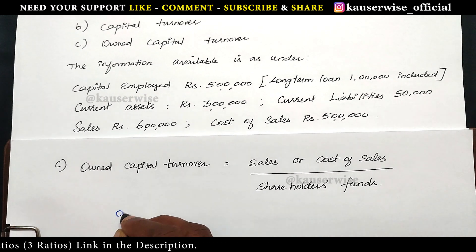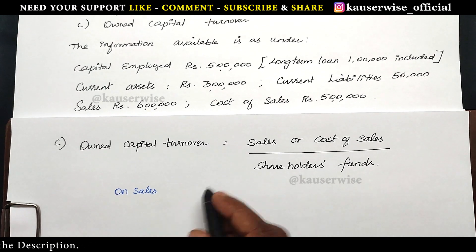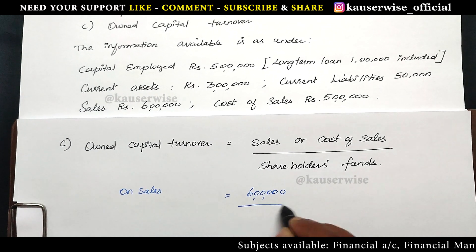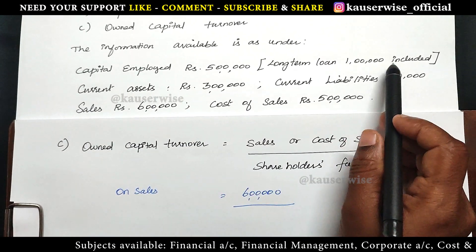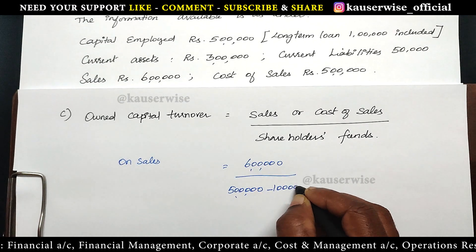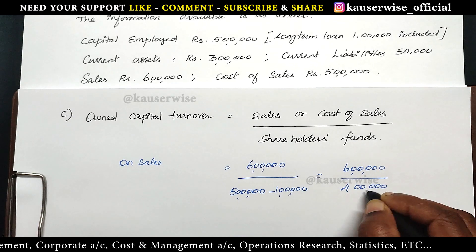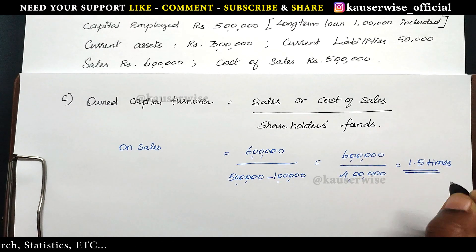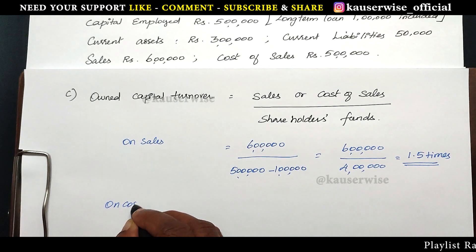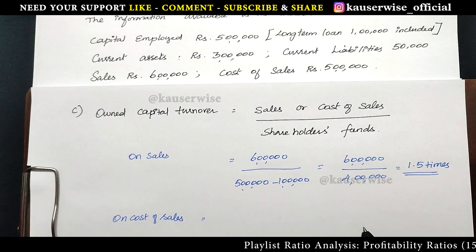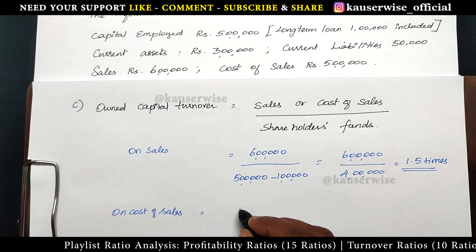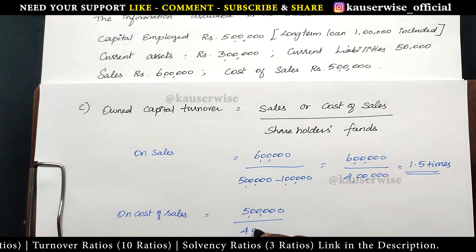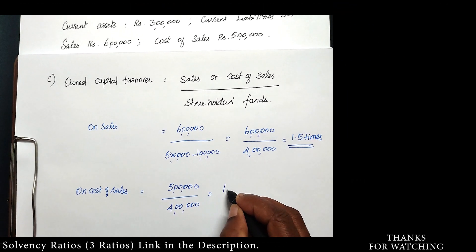The formula for owned capital turnover is sales or cost of sales divided by shareholders fund. Shareholders fund equals capital employed 5 lakh minus long term loan 1 lakh = 4 lakh. Owned capital turnover on sales: 6 lakh divided by 4 lakh = 1.5 times. Owned capital turnover on cost of sales: 5 lakh divided by shareholders fund 4 lakh = 1.25 times.